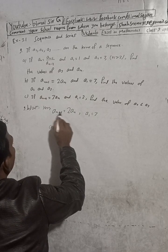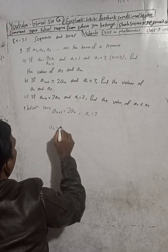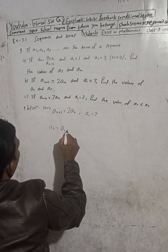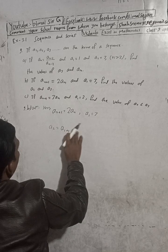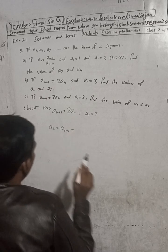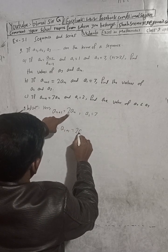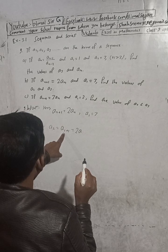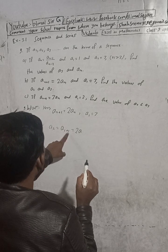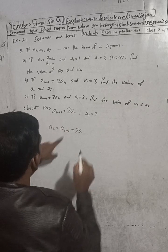To find a2, we put n equal to 1 in the formula. So a_(1+1) equals 2 times a1, that is a2 equals 2 times a1. Here a1 is equal to 3, so a2 equals 2 times 3 equals 6.